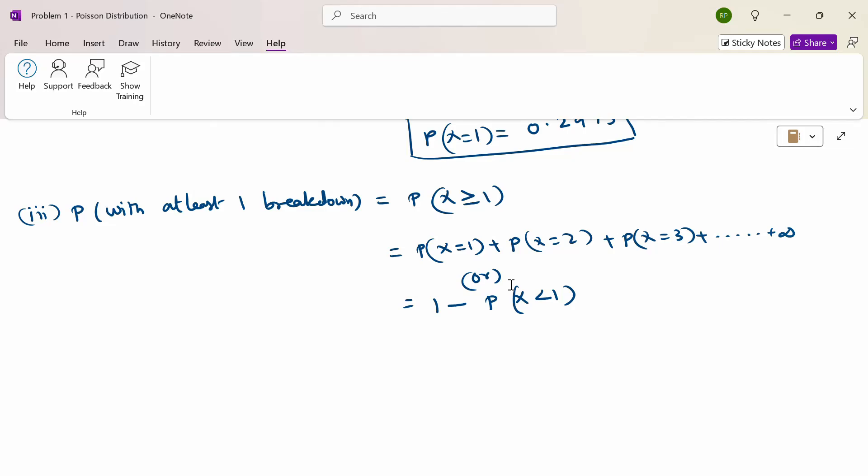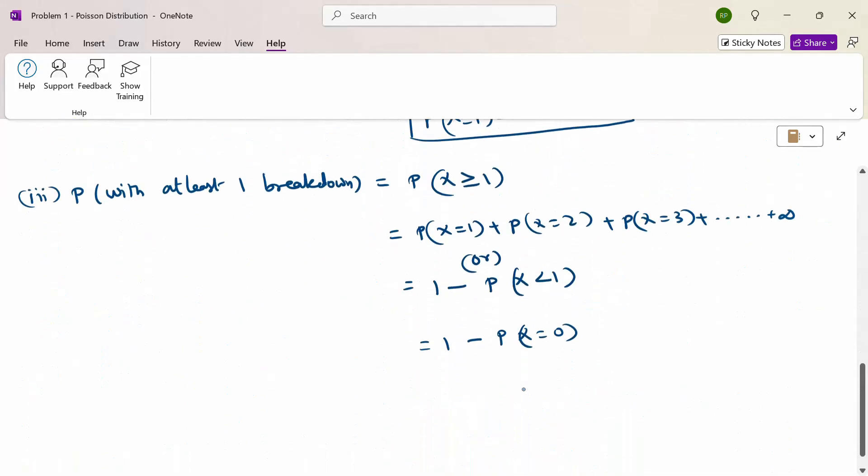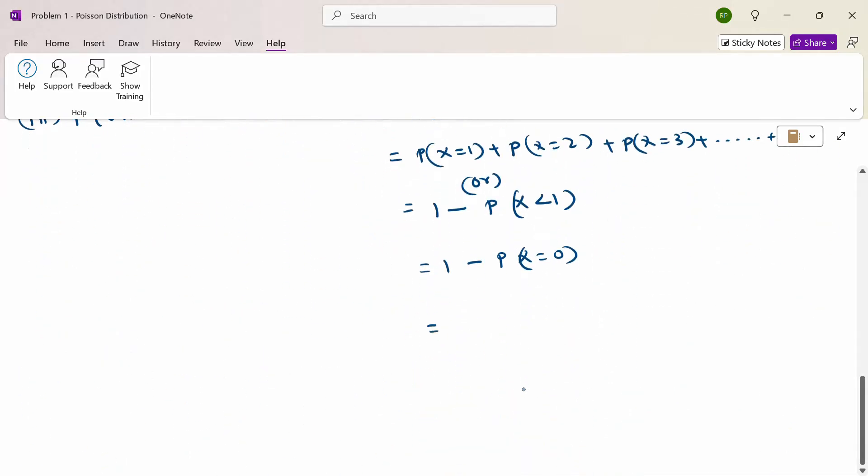So the previous one, 1 minus probability of x equals 0. Before 1, x is 0. So probability of x equals 0 is 0.1653. So the total value: 1 minus 0.1653 equals 0.8347.